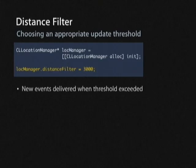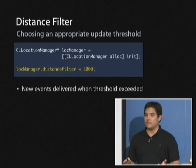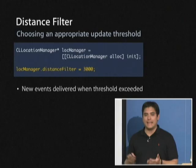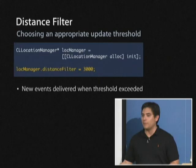You can also set the distance filter threshold — the minimum distance in meters before a new update is delivered. For a weather app, you might not need an update until you've moved several kilometers. Thinking carefully about required accuracy and distance thresholds can save significant power and reduce the time needed to get a fix.